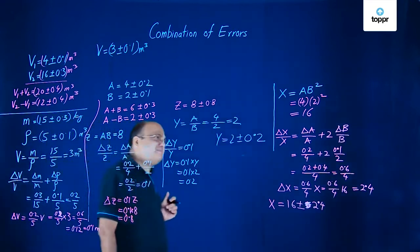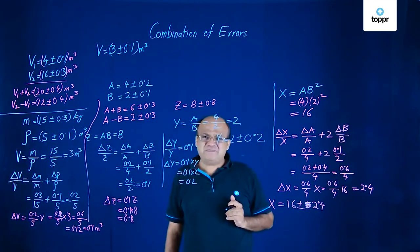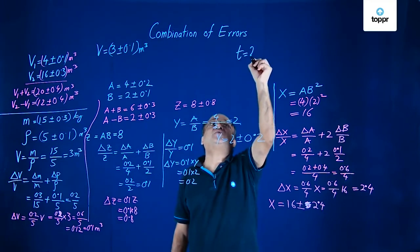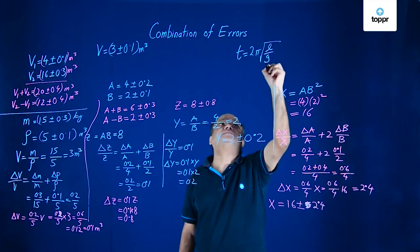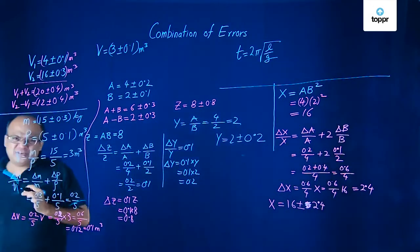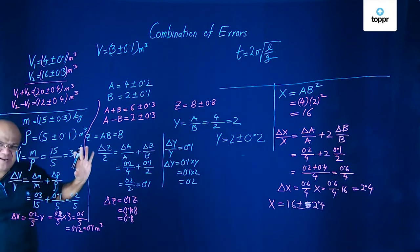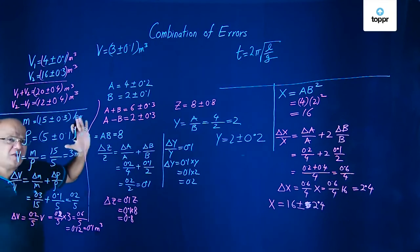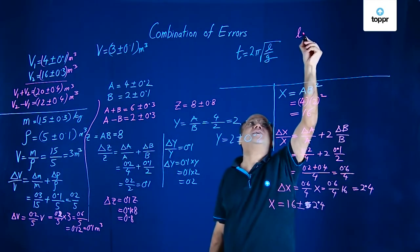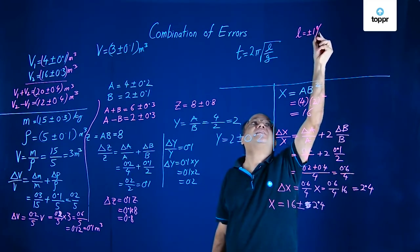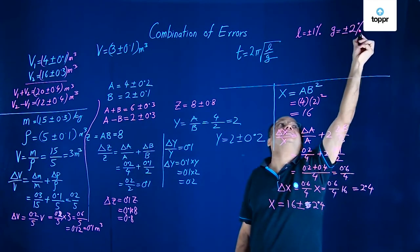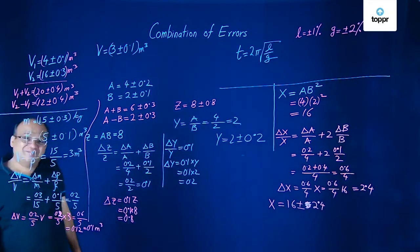We can also look at one more problem on the time period of a simple pendulum. What is the formula for time period of a simple pendulum? Remember? T equal to 2 pi root over l by g. Suppose in a particular question it is given that l and g are measured with plus minus 1 percent error and plus minus 2 percent error. What is the percentage error in t in estimation of time period?